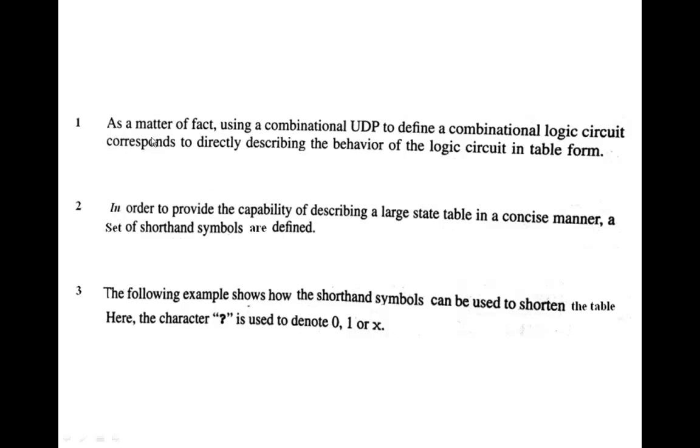Now moving on to the next slide. So here you read this first point. Using a combinational UDP to define a combinational logic circuit corresponds to directly describing the behavior of the logic circuit in table form. That is what the entire truth table needs to be described. In order to provide the capability of describing a large state table in a concise manner, a set of shorthand symbols are defined. So Verilog HDL facilitates shorthand symbols because we cannot keep filling the state table. We want to concise that one, that is possible with the help of shorthand symbols. We will see one example.